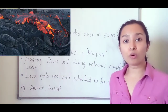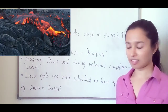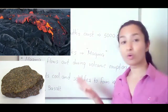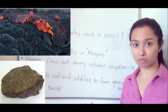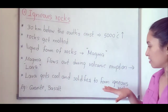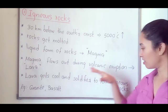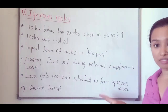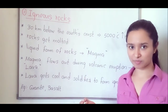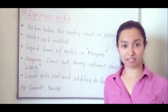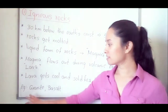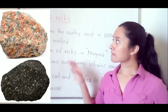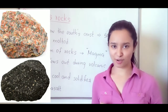This lava cools and solidifies to form igneous rocks. This solidified lava we call igneous rocks. Igneous rocks are very hard. Examples for igneous rocks are granite and basalt.